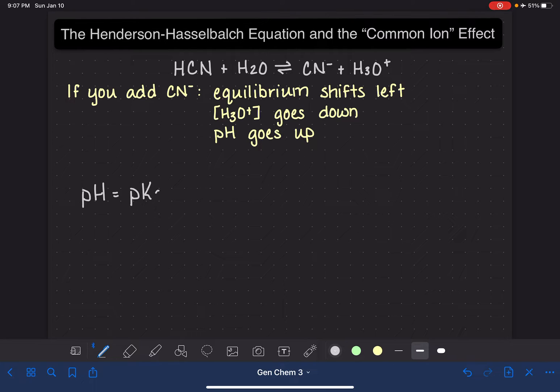It says that the pH of a system in equilibrium with a common ion present is equal to the pKa plus the log of the concentration of the base divided by the concentration of the acid.